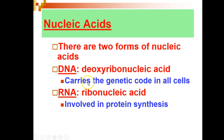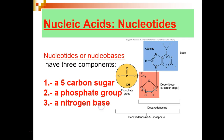which carries the genetic code in all forms of cells, and RNA, or ribonucleic acid, involved in protein synthesis. The building blocks of nucleic acids are called nucleotides or nucleobases. These molecules consist of three components: a five-carbon sugar to which a phosphate group is attached at one side of the molecule, and a nitrogenous group is attached to the other side of the five-carbon sugar.